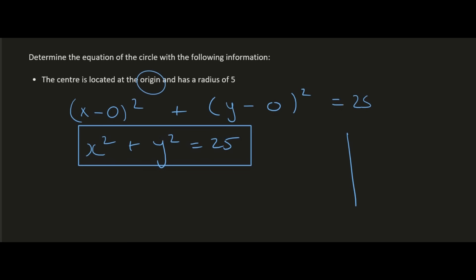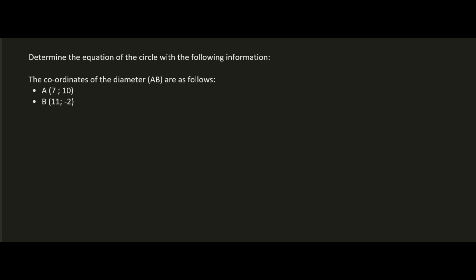Here's quite an interesting one. We have to determine the equation of a circle where they have given us the coordinates of the diameter. What you need to realize is that the diameter always goes through the middle, and they've given you the two coordinates of the diameter—they've given you A and they've given you B.